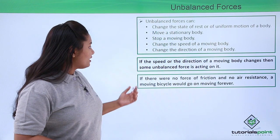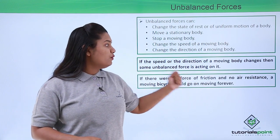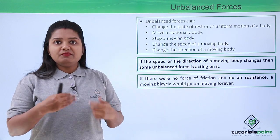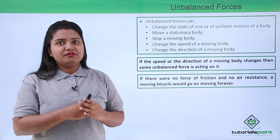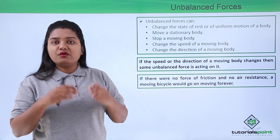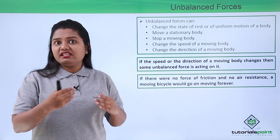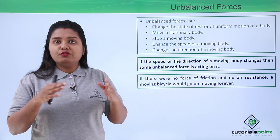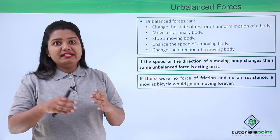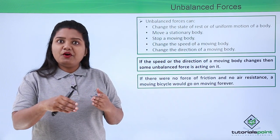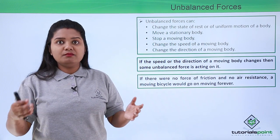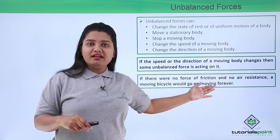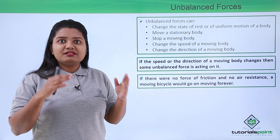If there were no force of friction and no air resistance, a bicycle would move forever. When we pedal a bicycle and leave it, it stops after some time because frictional forces and air resistance act in the opposite direction of motion. But without friction or air resistance, the bicycle wheels would roll forever, and a kicked football would also roll forever and never come to a stop. These forces play an important role when it comes to moving bodies, since they stop them.